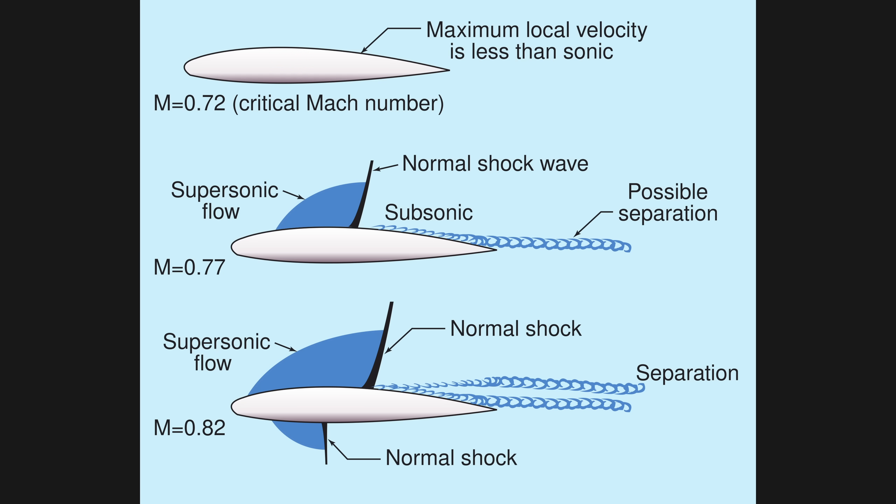Fans typically have smaller diameters than propellers, which lowers tip speed and enables them to spin faster. Additionally, the duct reduces shock waves generated by blade tips approaching Mach 1, allowing fans to operate at higher Mach numbers than open propellers.